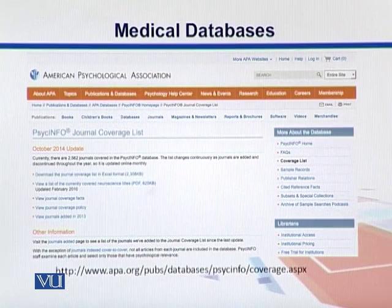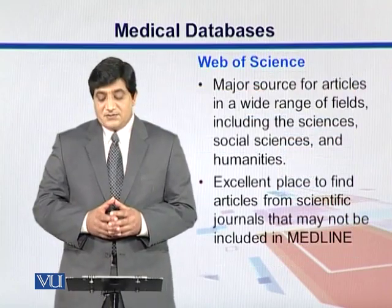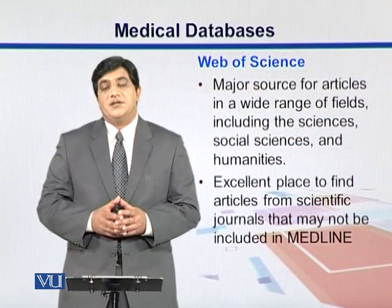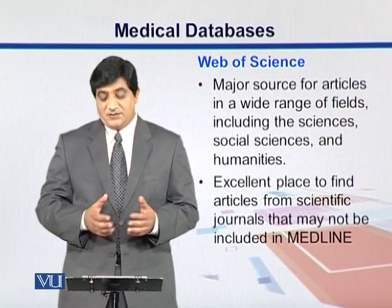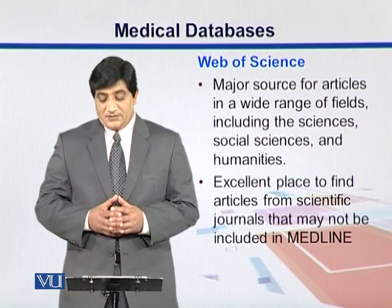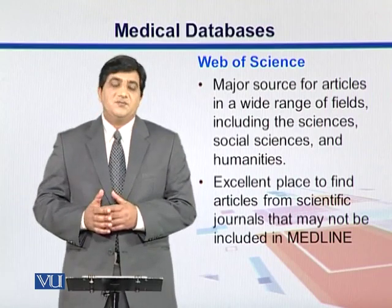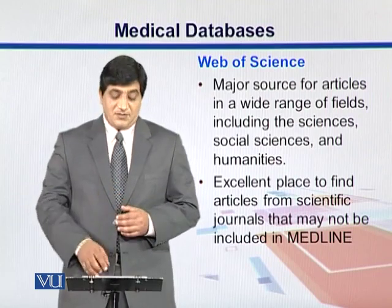Here is the page for the American Psychological Association, where you can see PsychInfo journal and its different coverage lists. Web of Science is another major source for articles, mainly for social sciences and humanities, and it is an excellent place to find journals which may not be present in Medline.